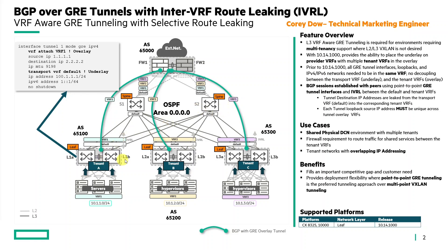As you can see in this diagram, we have three tenants — A, B, and C — each having different VRFs: VRF1, VRF2, and VRF3. Now with 10.14-1000, we also have a transport VRF, as you can see in the config snippet for the tunnel configuration. You can see we specify the GRE tunnel type and the attachment to the overlay. The transport VRF is in the underlay, so the source and destination IP addresses are in the default VRF, and they're leaked across to each of the tenant VRFs as pictured in the diagram.